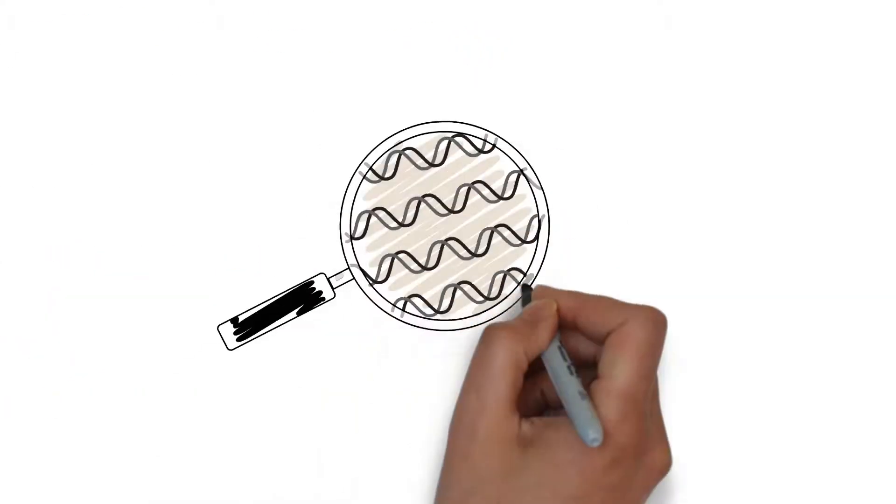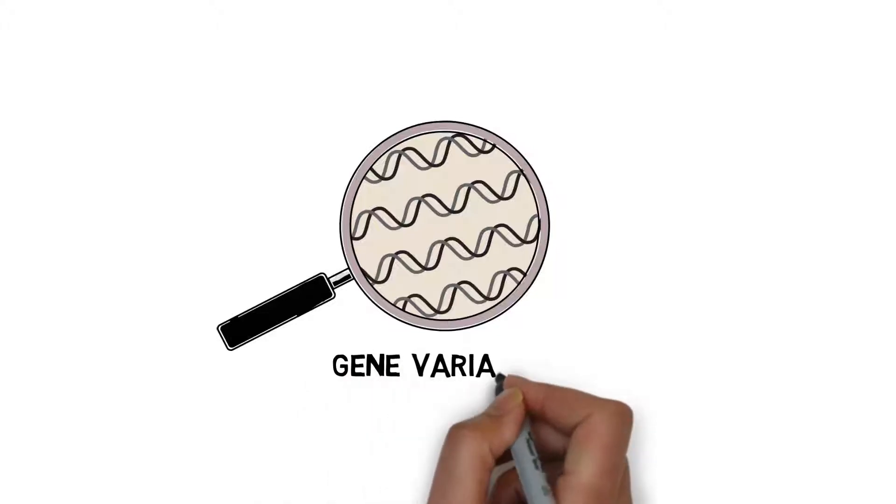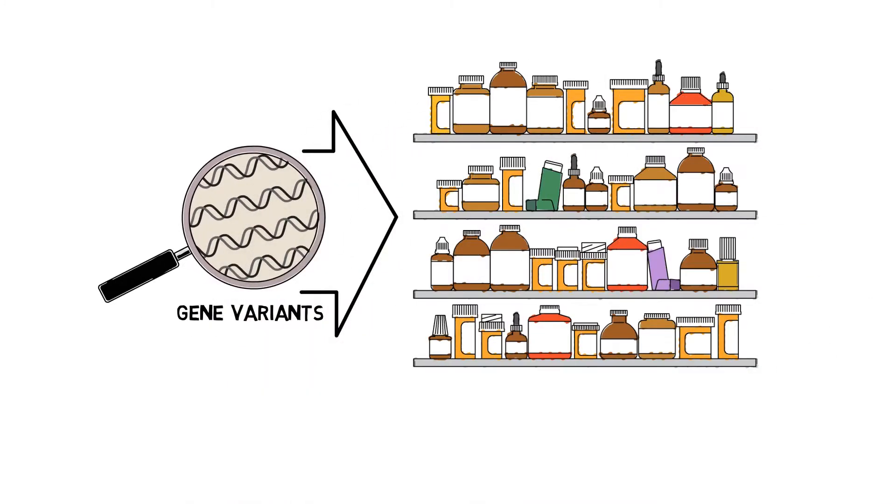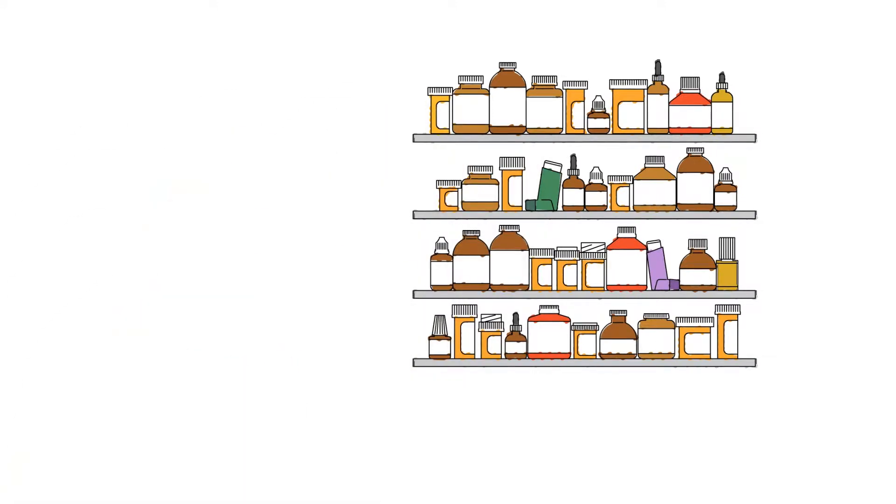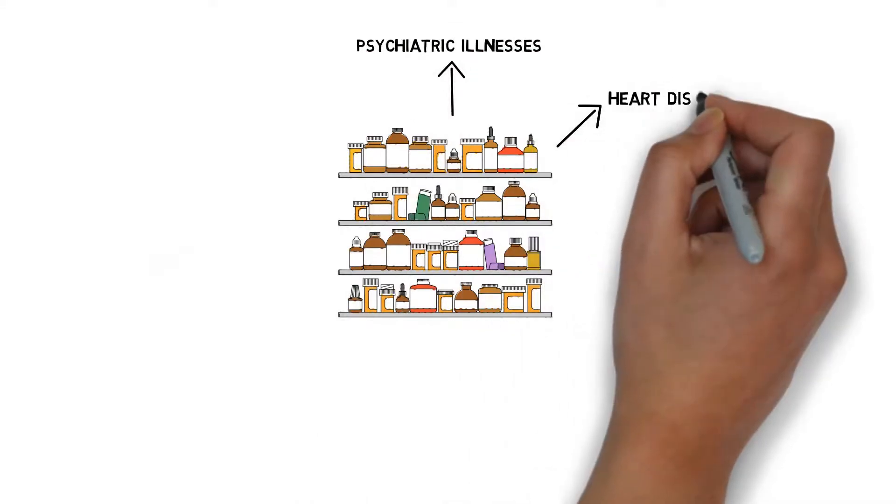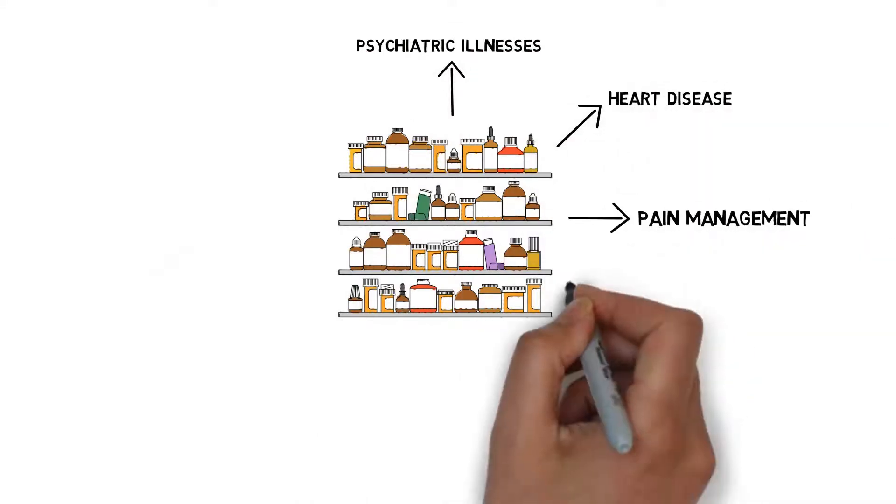Currently, there are several different gene variants that, when tested, can assist your doctor in more accurately prescribing over 100 medications. These medications are used in treating psychiatric illnesses, heart disease, pain management, and cancer.